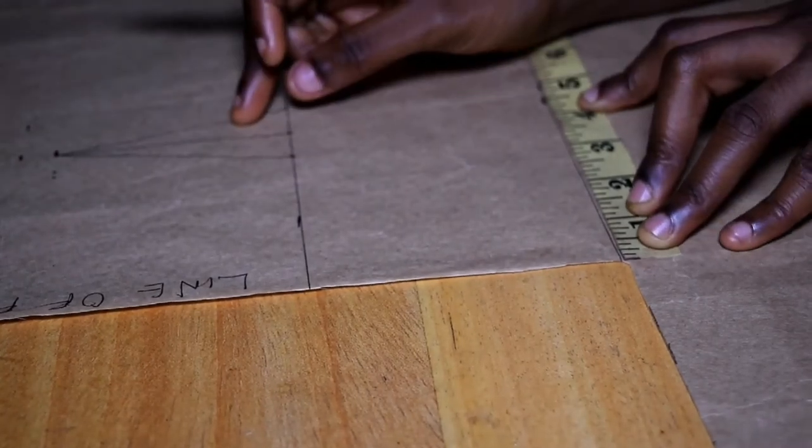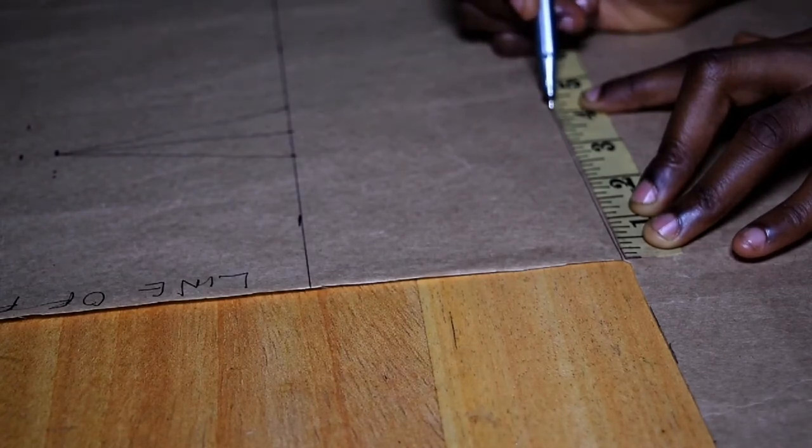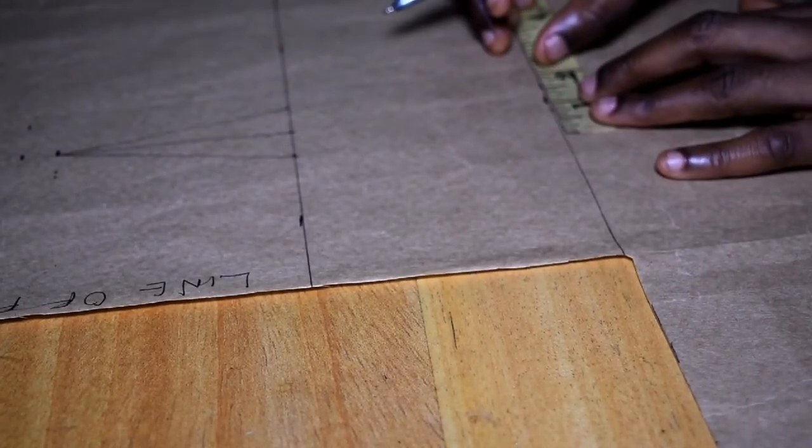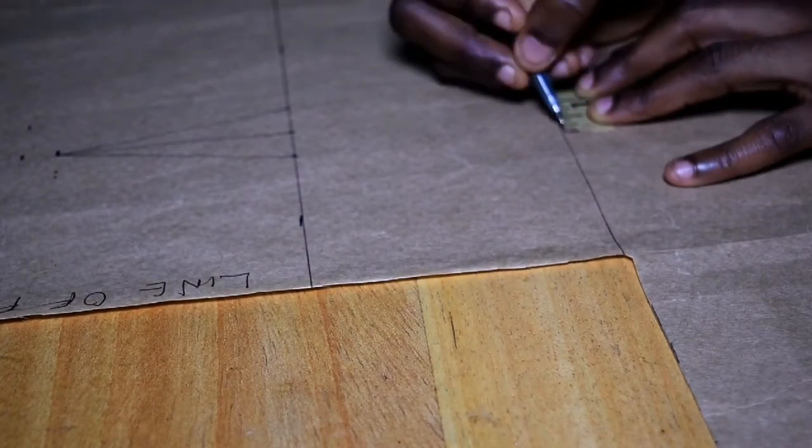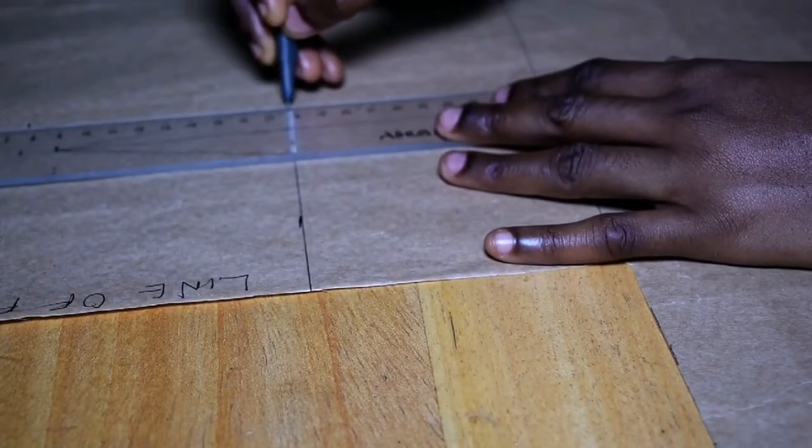So now you do your darts allowance of 1.5 inches. I'm doing mine on my natural waist. You can do that to whatever length you want to get your darts to.